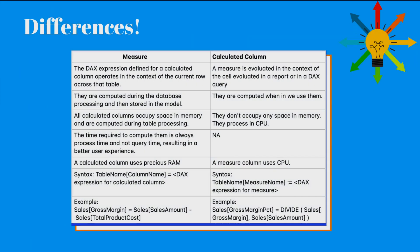In case of measure and calculated columns, the difference is in the context of evaluation. A measure is evaluated in the context of the cell evaluated in a report or in a DAX query, whereas calculated column is computed at the row level within the table it belongs to.